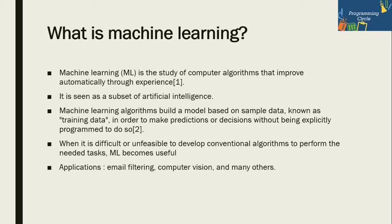Machine learning basically comes under AI — artificial intelligence. You can call AI as a superset and ML as a subset of it. It actually works upon sample data known as training data. Training data is very crucial: what kind of training data we are feeding to the algorithm, and whether that training data is sufficiently representing the target class and the other class. There should not be any biasness.